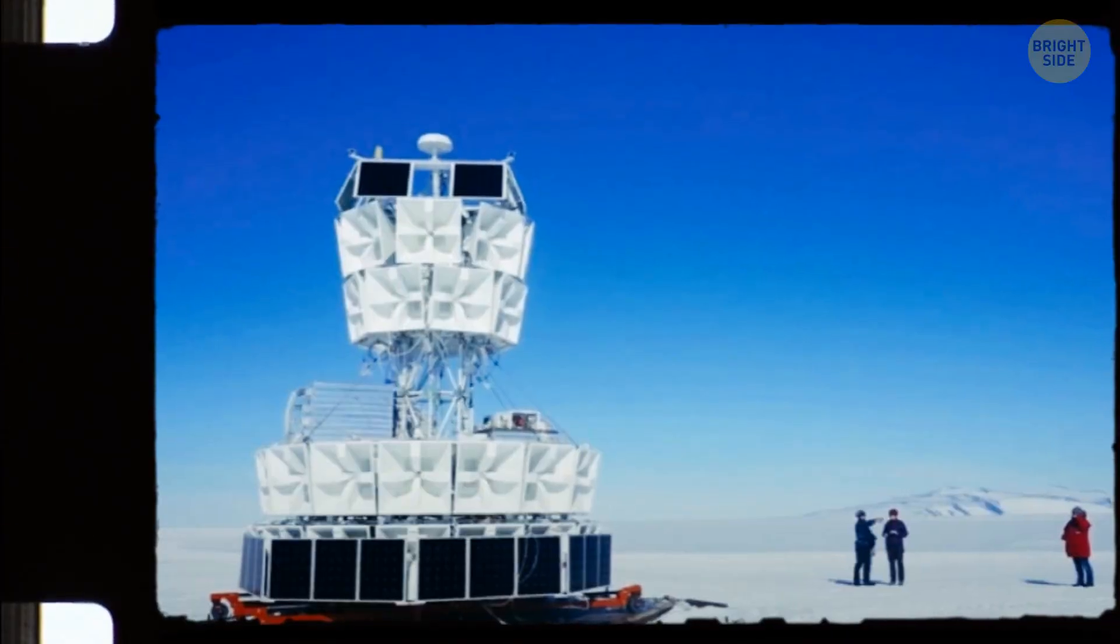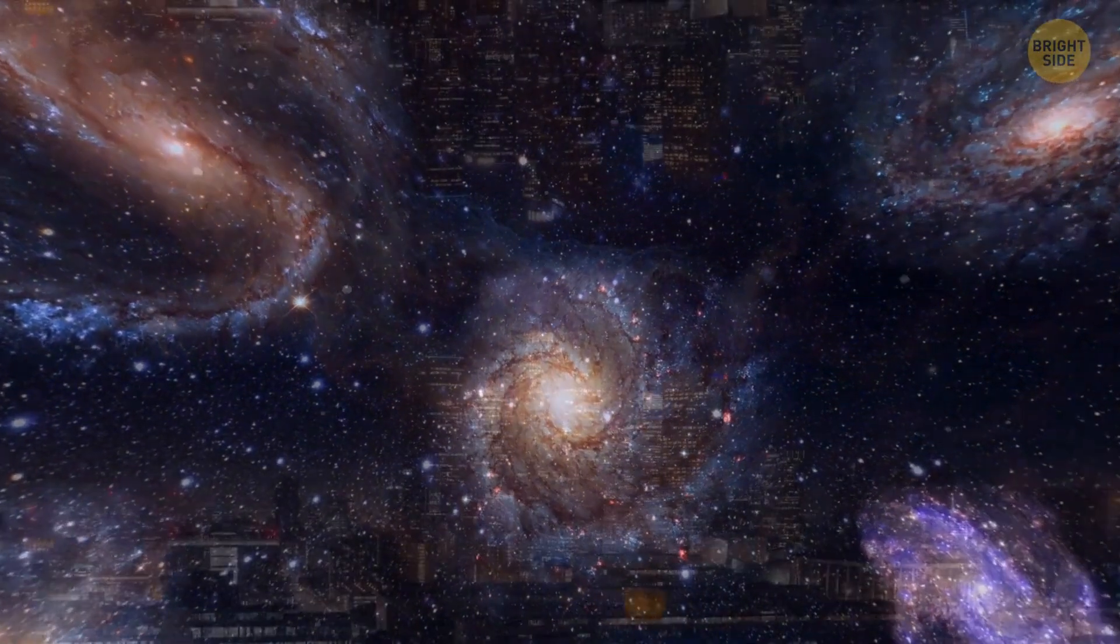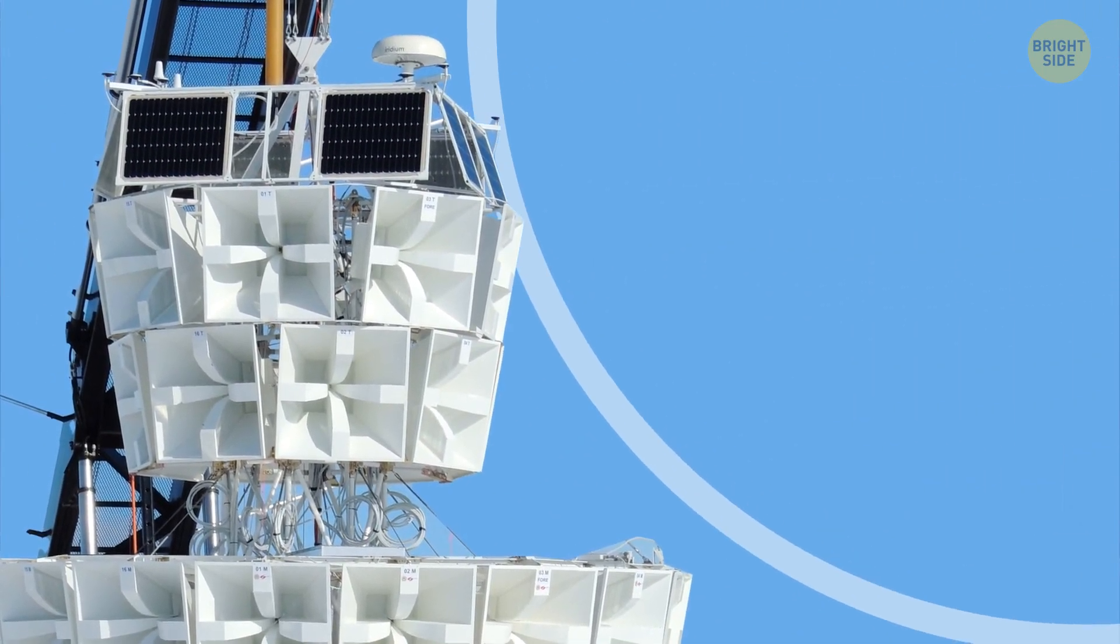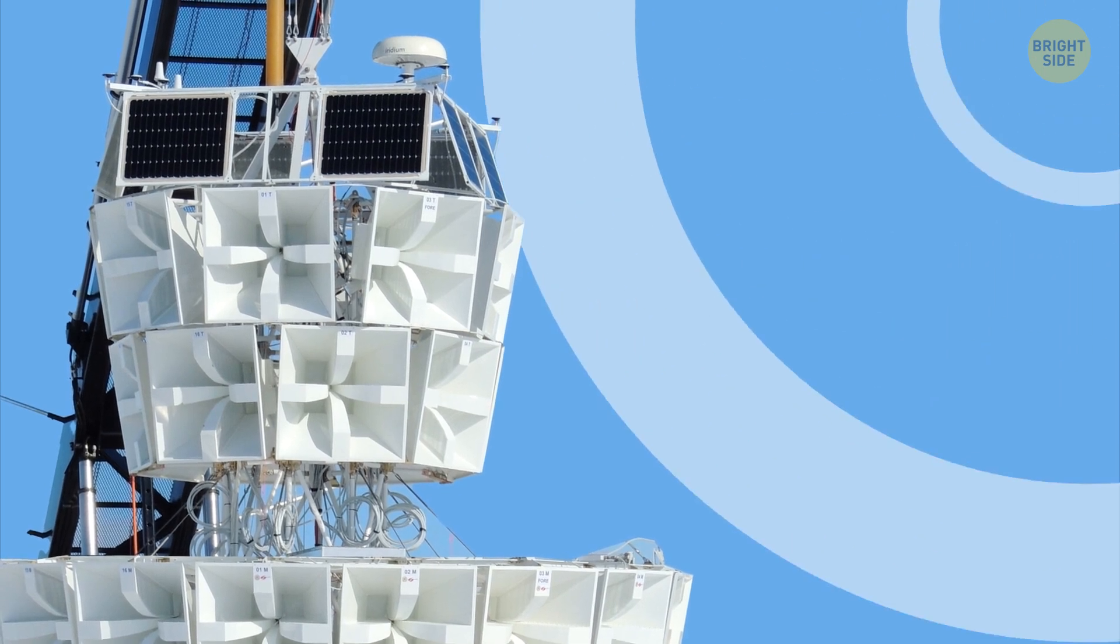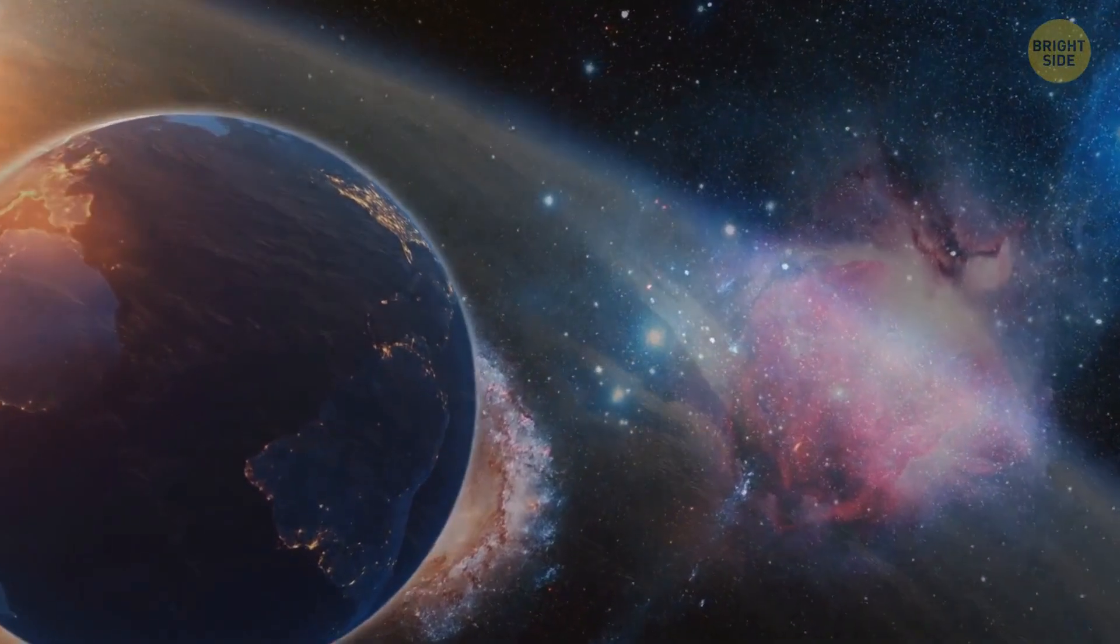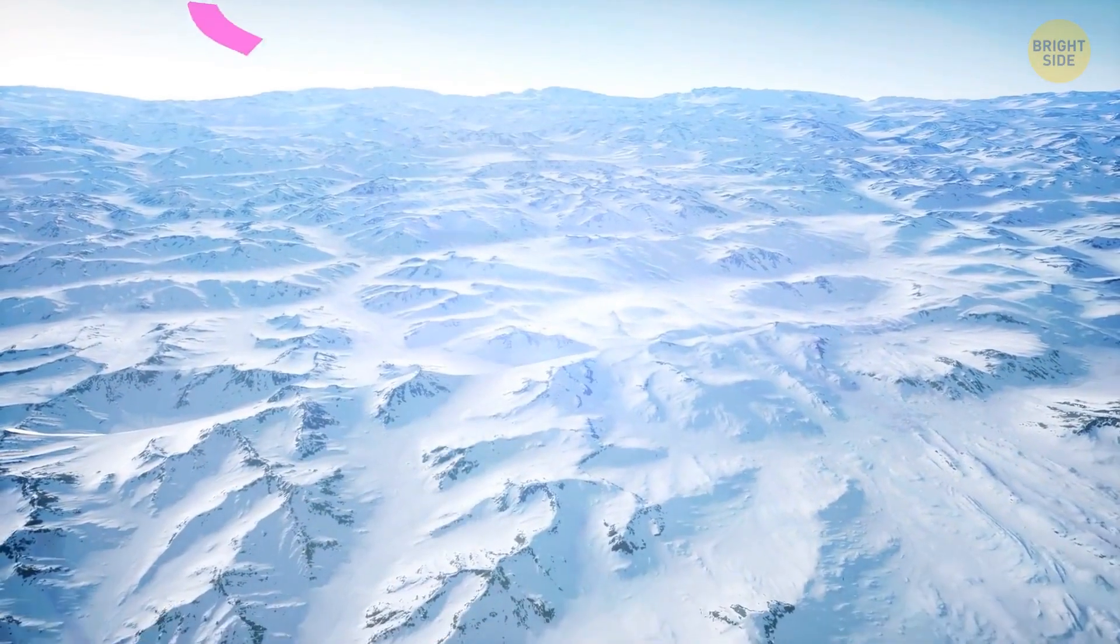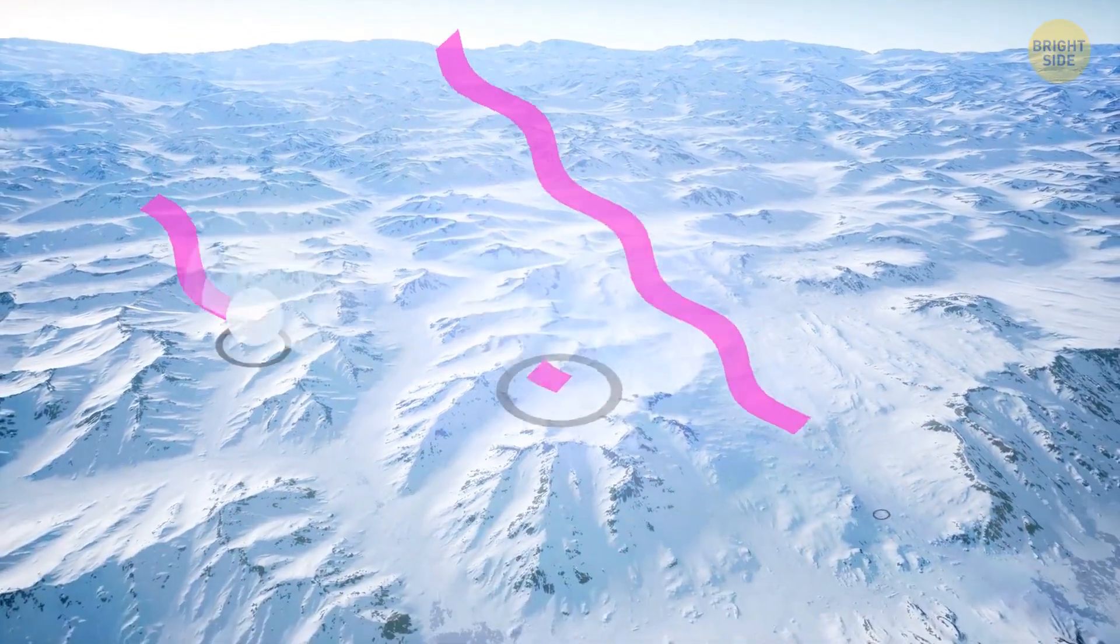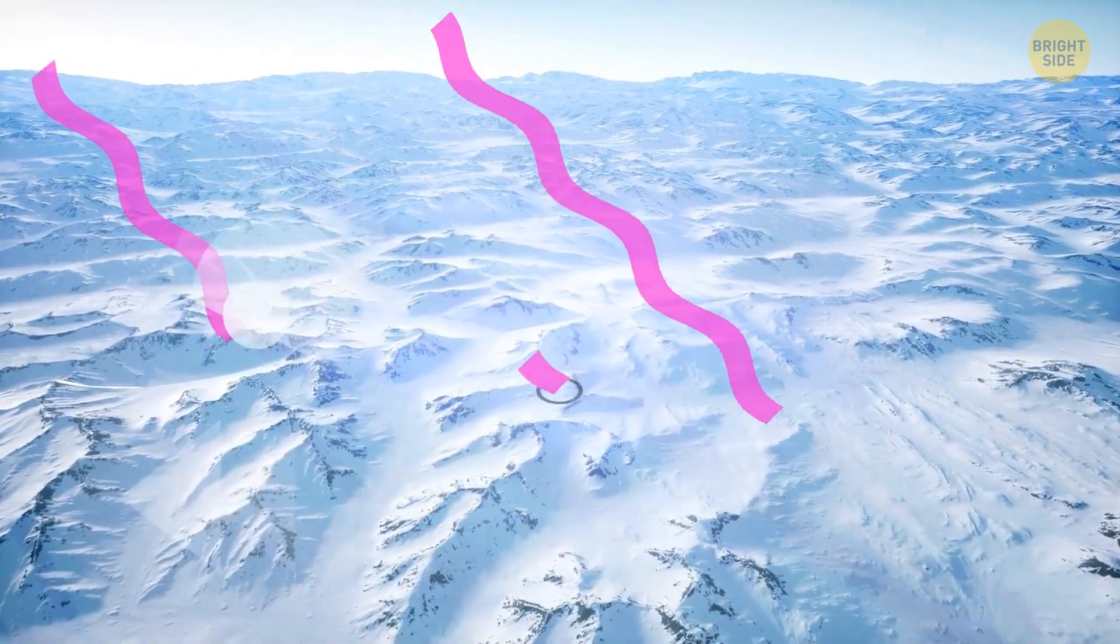All right, now we know what ANITA is doing. But what about that parallel universe stuff? Don't worry, we're getting there. In 2018, ANITA began receiving abnormal radio signals that caused quite a stir in the scientific community. Remember how neutrinos come to us from outer space and then gradually sink deep into our planet? So recently ANITA has discovered neutrinos that didn't descend from space as usual, but rather rose up from Earth.